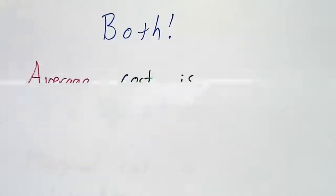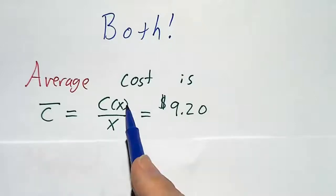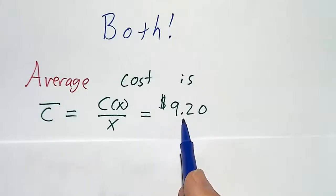Well, the answer is that they're both right, except they're talking about two different things. Alice is talking about an average cost. The average cost is the total cost divided by how many things you're making. And that's $9.20.